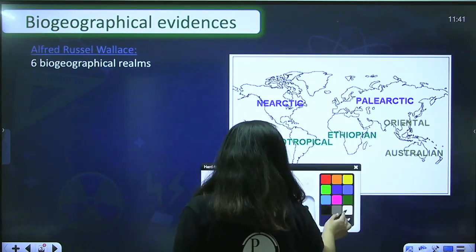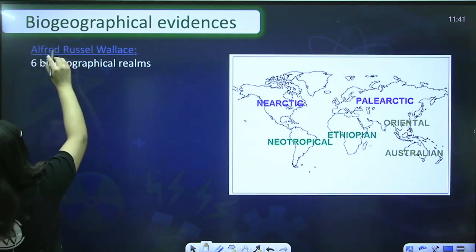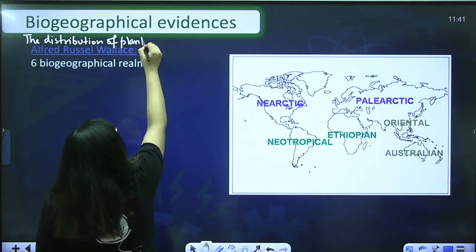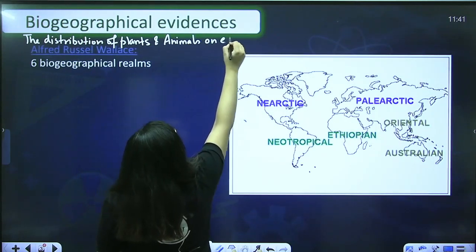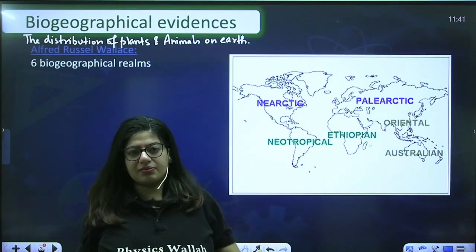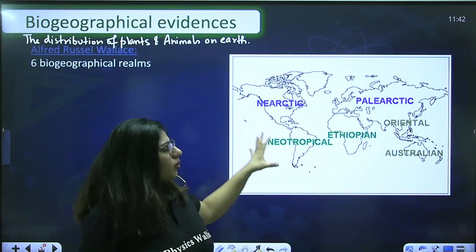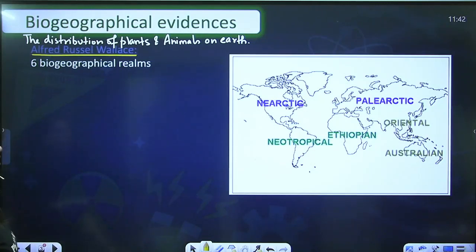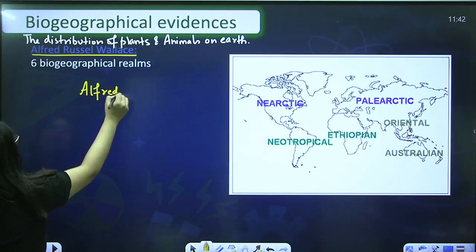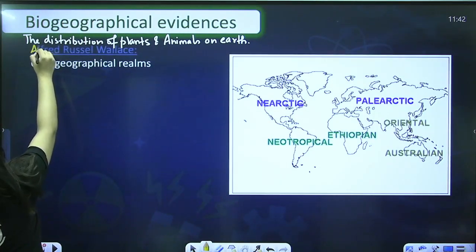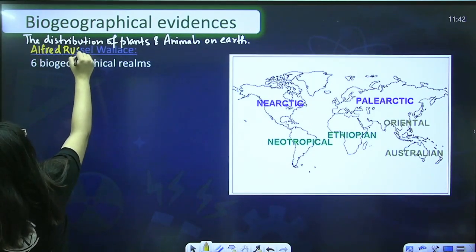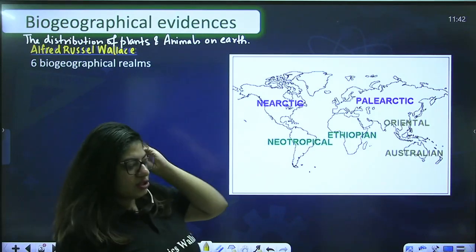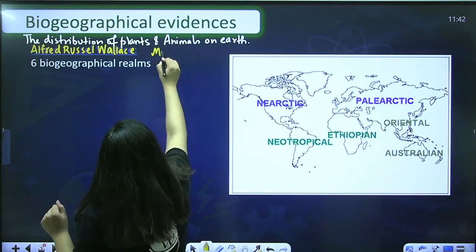What are geographical evidences? Basically, geography indicates the distribution pattern of plants and animals on Earth — how different organisms are distributed on our planet. There was a scientist named Alfred Russell Wallace. He went on a voyage to the Indonesian island called the Malay Archipelago.